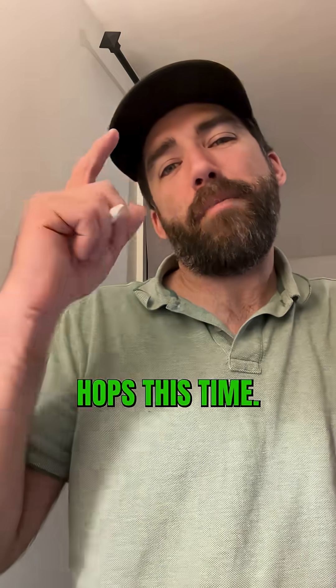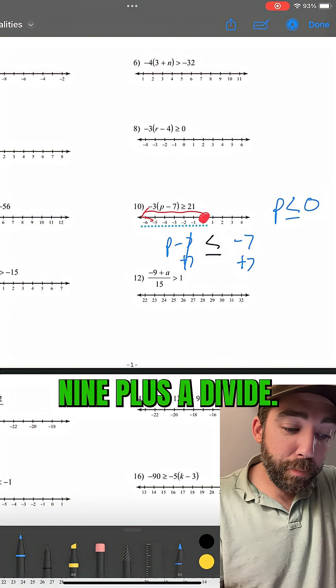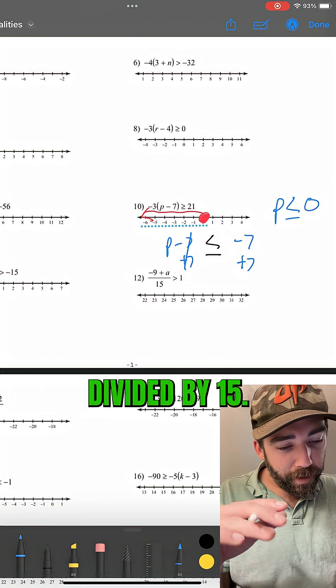Three hops this time. All right. One more. Right here, we have 9 plus a, divide all of that, divided by 15.